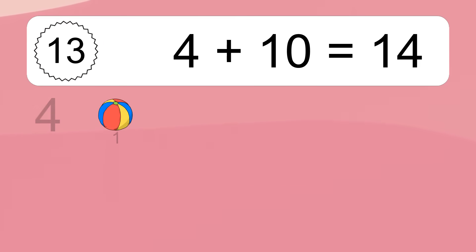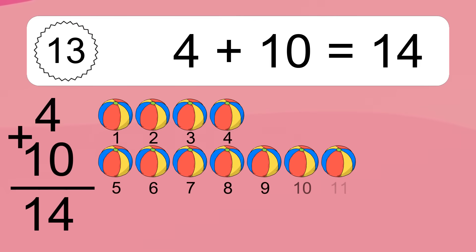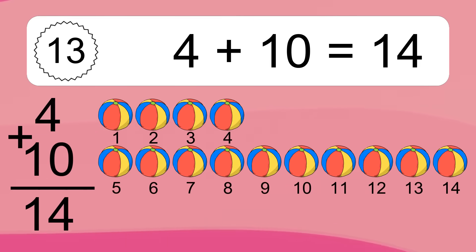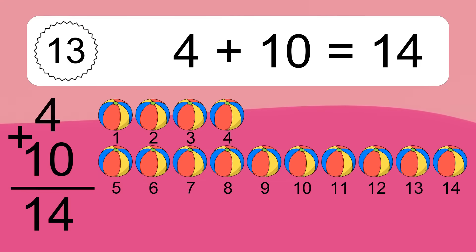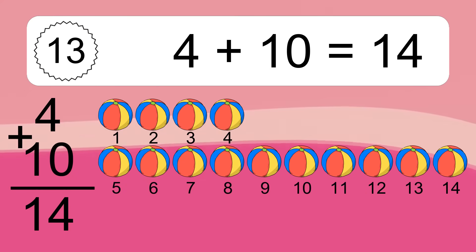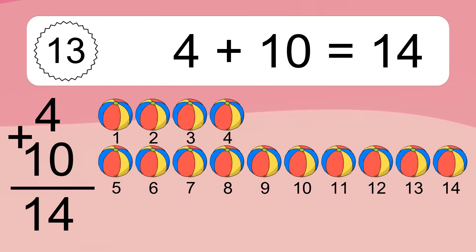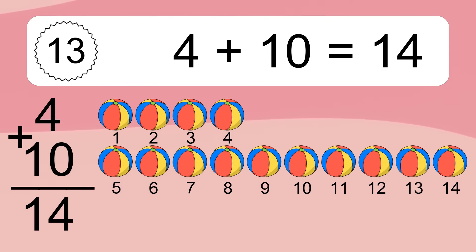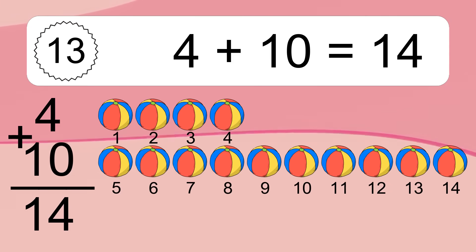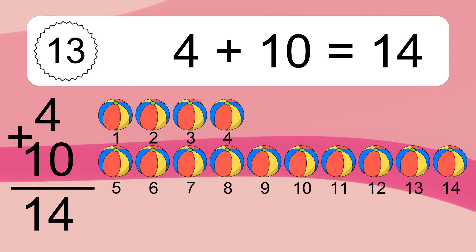4 plus 10 equals what? 4 plus 10 equals 14. Let's count it: 1, 2, 3, 4, 5, 6, 7, 8, 9, 10, 11, 12, 13, 14.